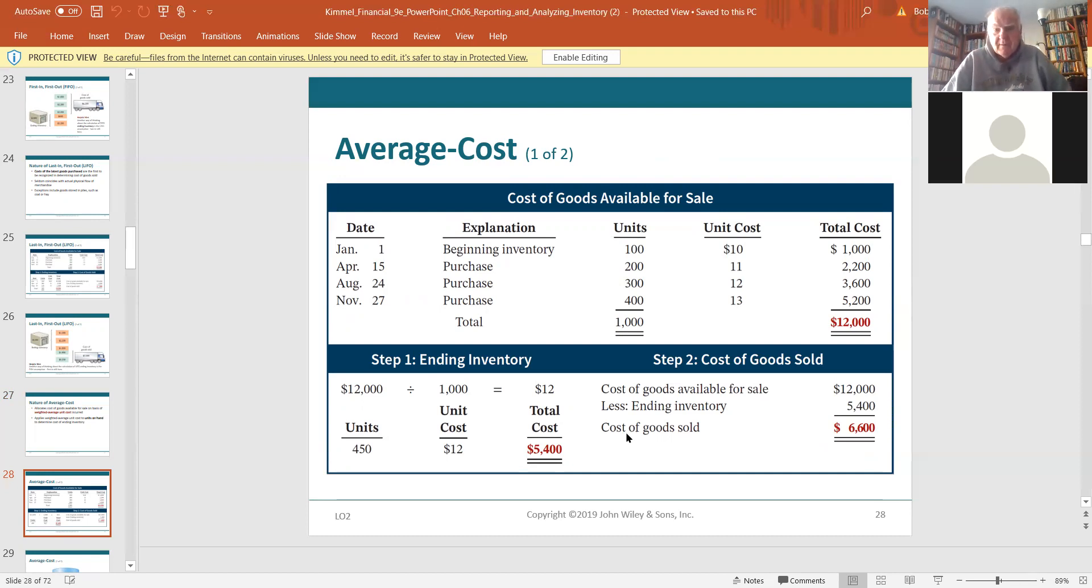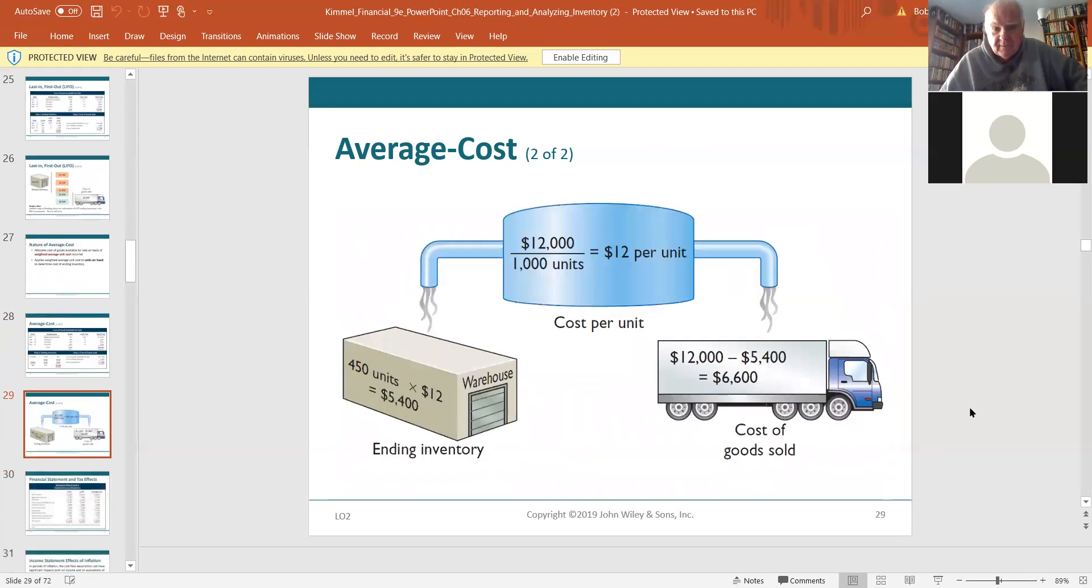6,600. Yeah. Do you have any questions on this one? No. Don't make, it's an easy one. Don't make this mistake, which some students do. Some students do this. Oh, the average cost. I'm going to add 10, 11, 12, 13, and divide by four. No. Oh, that's not going to work. You do it horizontally on the total line, total available line. That's why this template here is crucial. You can't answer any of these LIFO problems unless you set this up for yourself real quick. And you'll need that on the test.